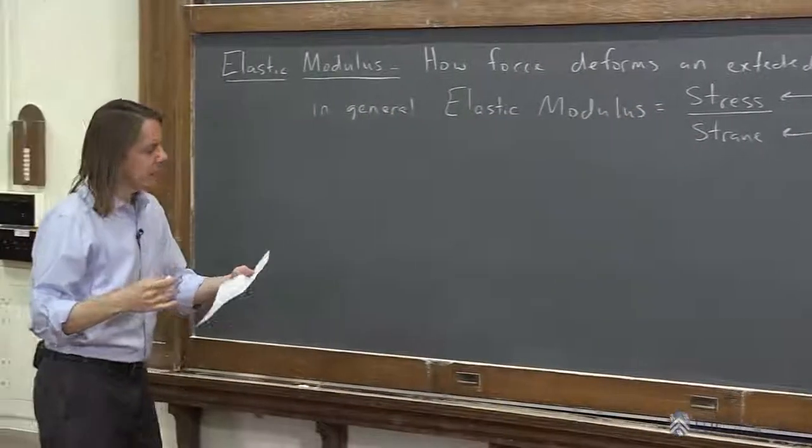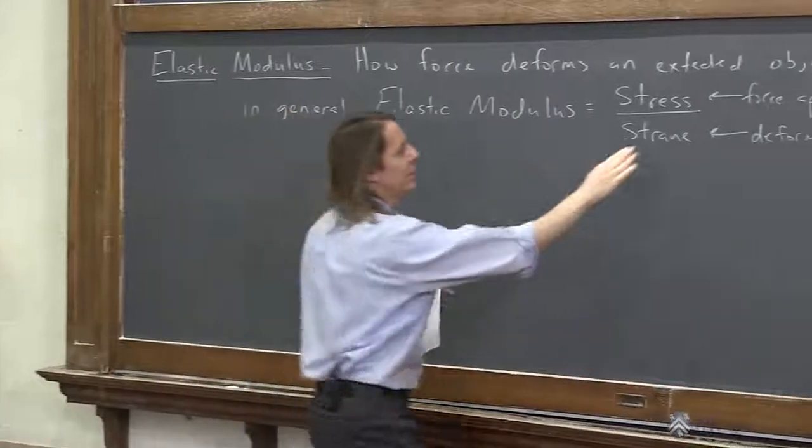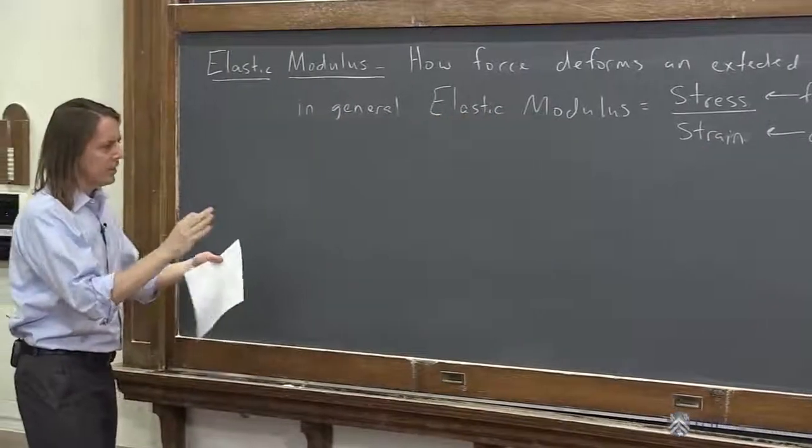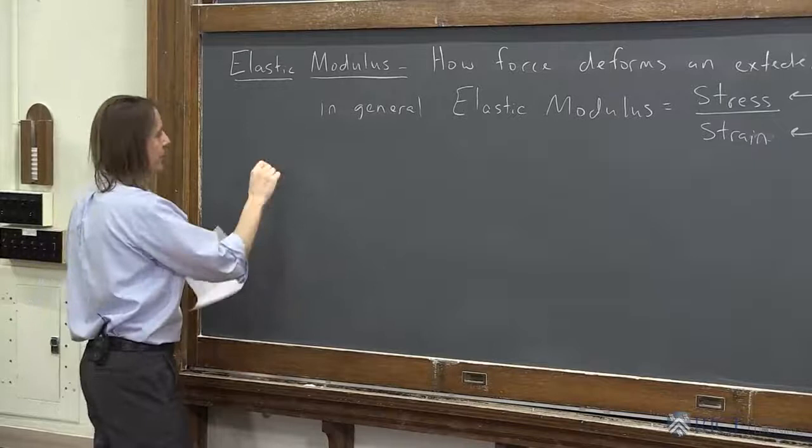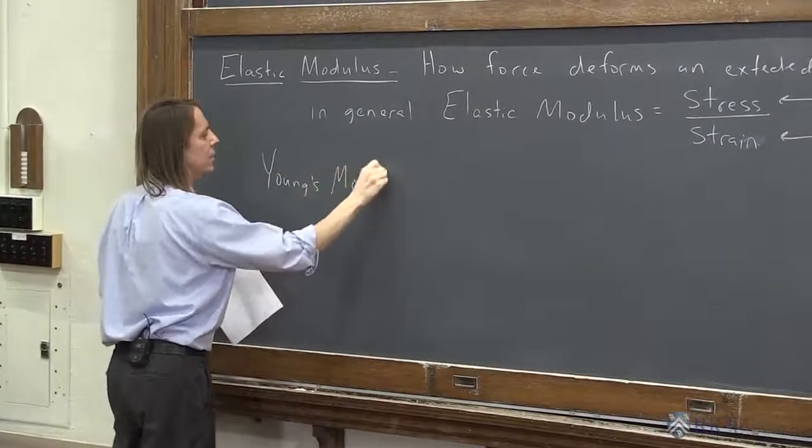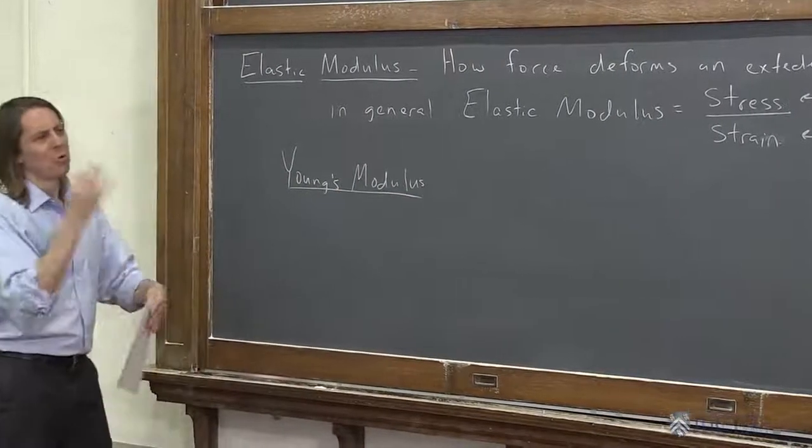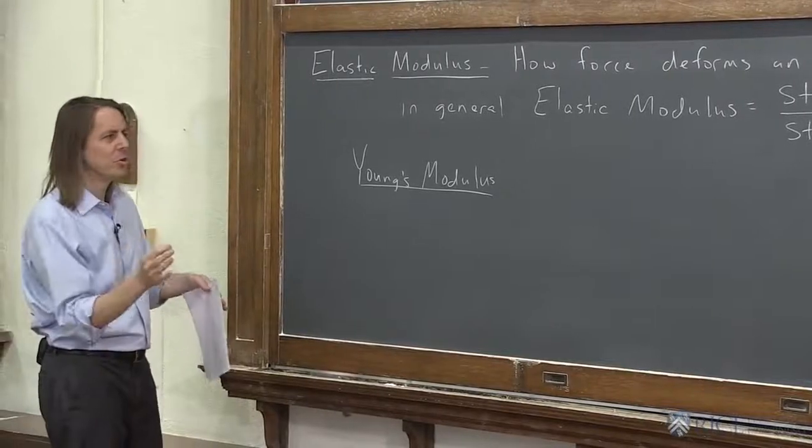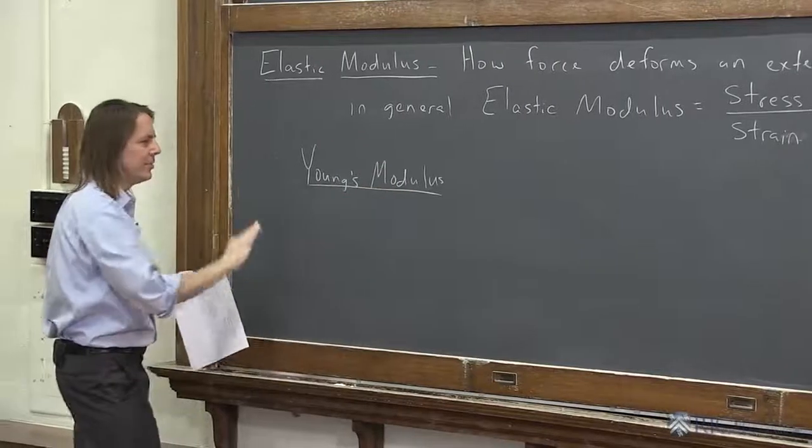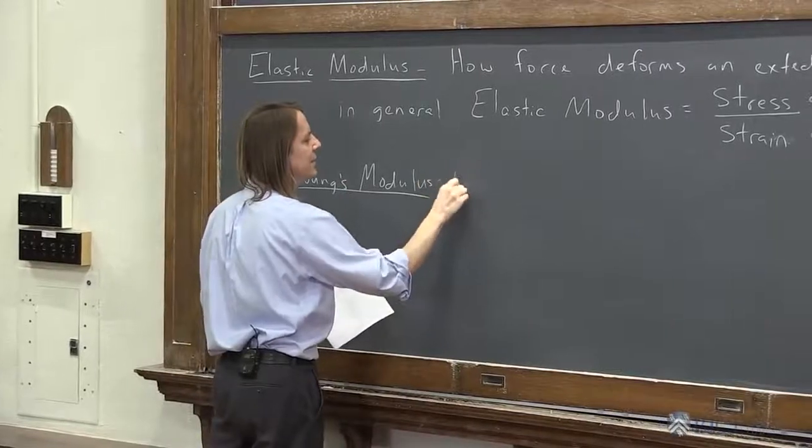So now we're going to look at several versions of elastic modulus. I'm sorry, I never could spell under stress. So we're going to look first at the one that has to do with extending an object. And that's usually referred to as the Young's modulus, and you have to be careful with these. Often they'll just throw words around, just say elastic modulus. And sometimes they'll call it Young's, sometimes they won't. So I was trying to tell you there's the general way to think of it, and now here's the specifics.